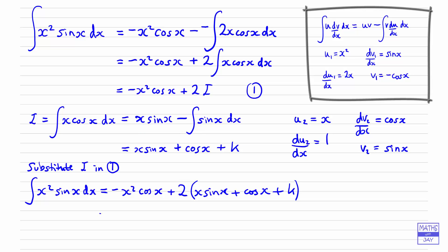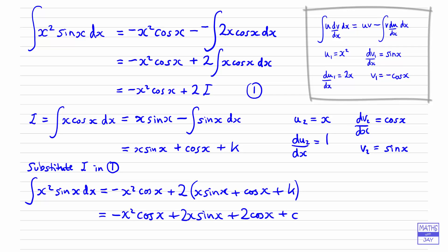Simplifying that, we have minus x squared cos x plus 2x sin x plus 2 cos x, and then we could either write plus 2k or just write c for the constant of integration.